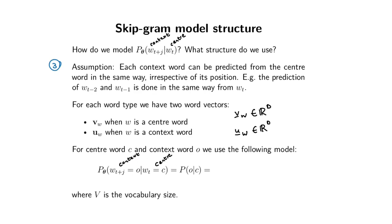We're going to take the dot product between the context word embedding and the center word embedding, denoted with a dot, or equivalently as the transpose of the context word embedding multiplied by Vc — that is the dot product.